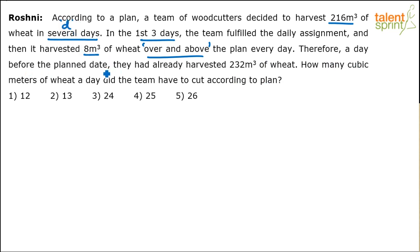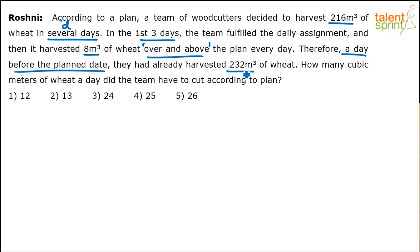They had some plan to finish in d days. A day before the planned date — which means in one day less — they had already harvested 232 cubic meters of wheat. Their actual work to be done was 216, but they ended up doing 232, and that too a day before the planned date. So they took one day less to do some extra work and finish not only the assigned work but additional work too.